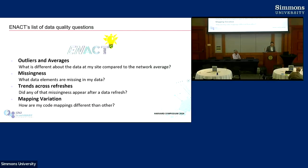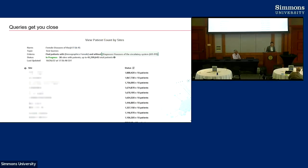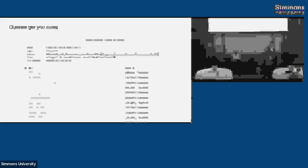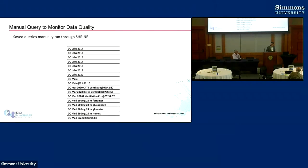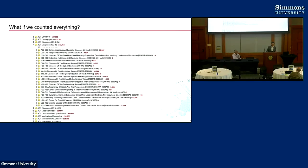And then code variations between sites — how are labs coded specifically? You can actually figure out a lot of this just by running queries in the network. For example, there's a query running in the network for diagnosing diseases of the circulatory system. By running this query and getting back counts from sites, you can look at the variation across sites, the site averages, and whether or not you're an outlier. People in ENACT like Michelle Morris have piloted work that does this — running swaths of data quality queries and aggregating results into a spreadsheet to produce reports.